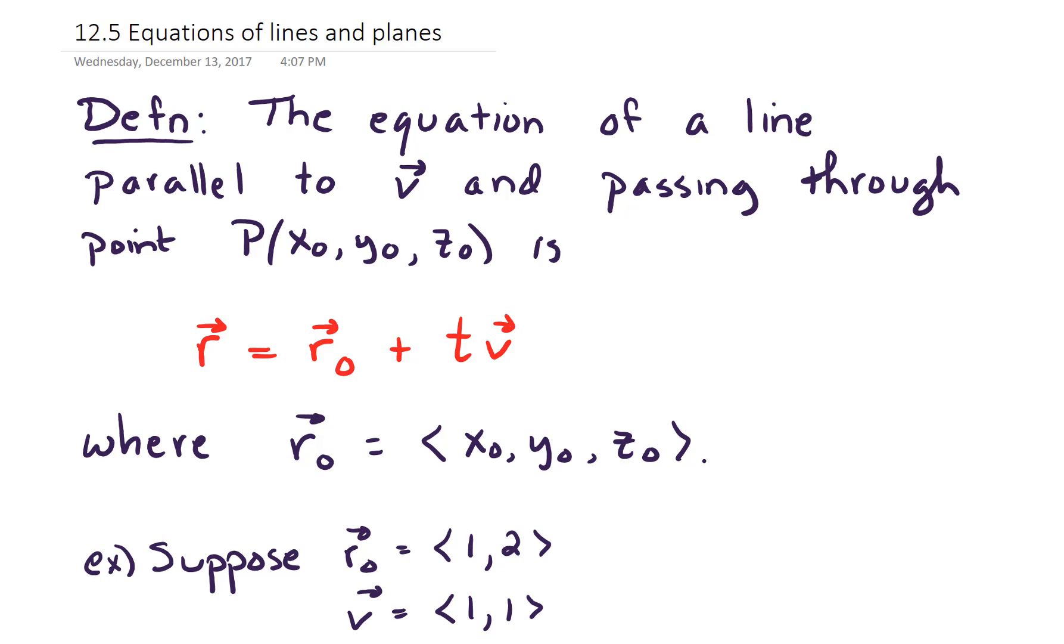The equation of a line parallel to vector V and passing through point P, given by X0, Y0, Z0, is R equals R0 plus T times V, where R0 is equal to the vector with terminal point X0, Y0, and Z0.